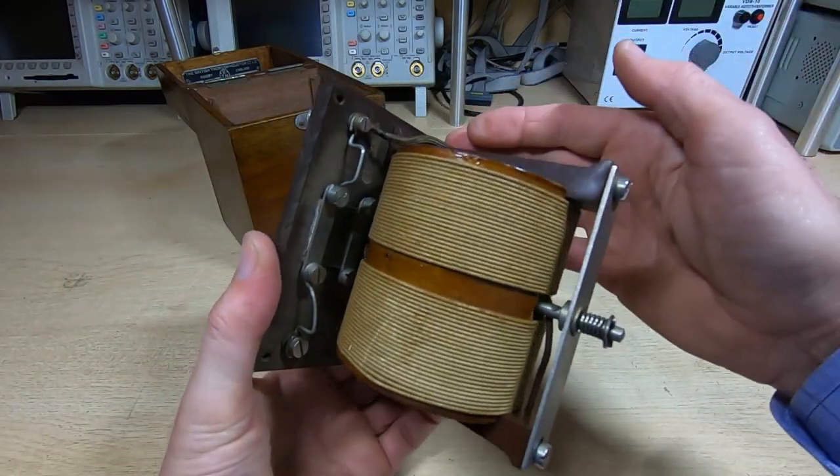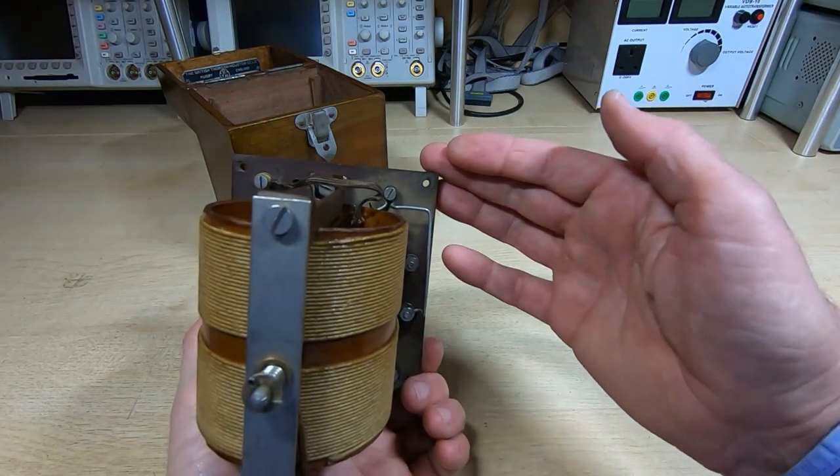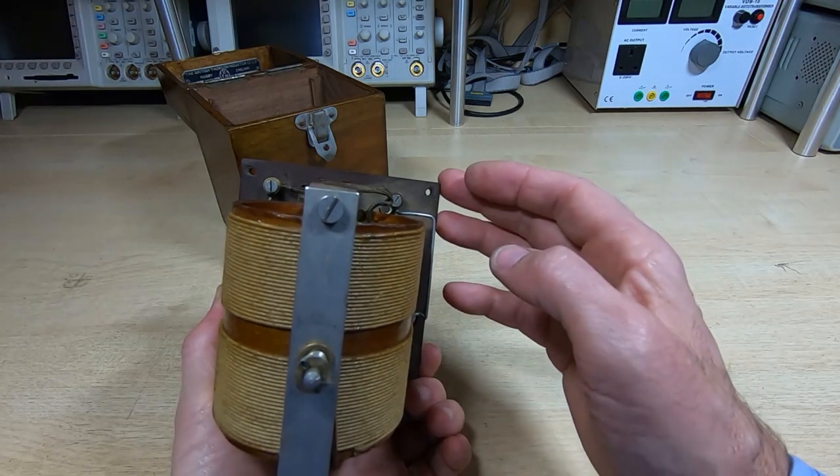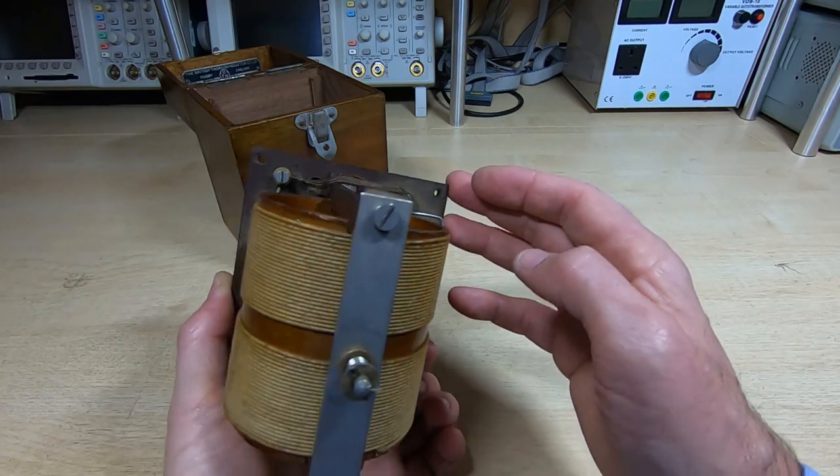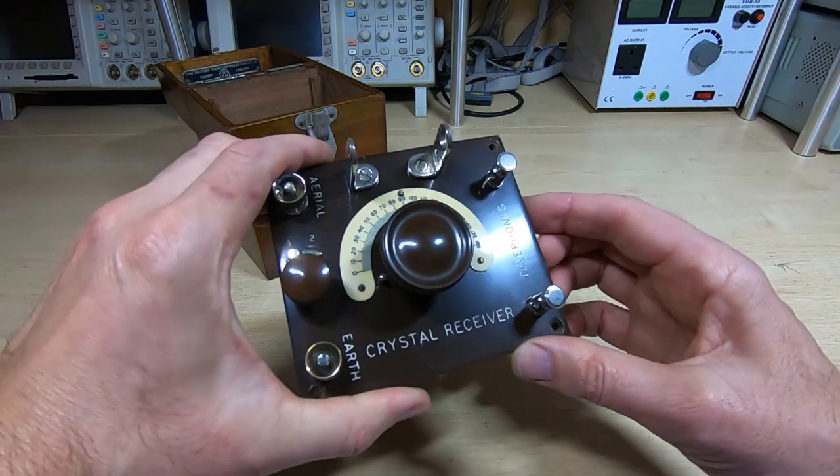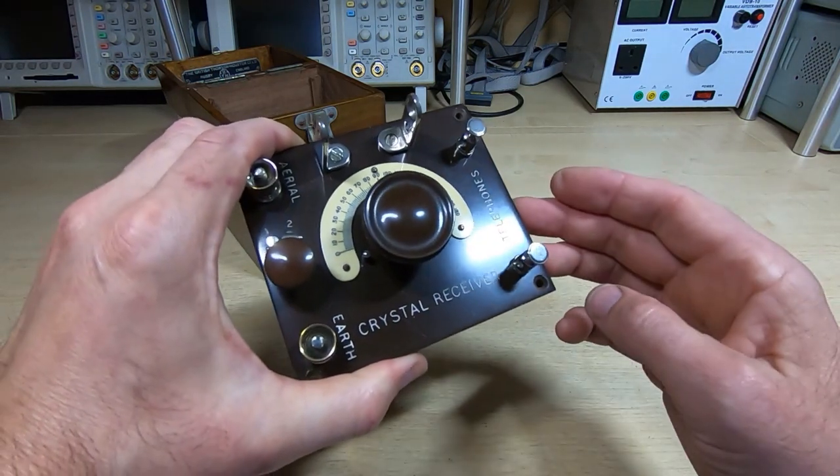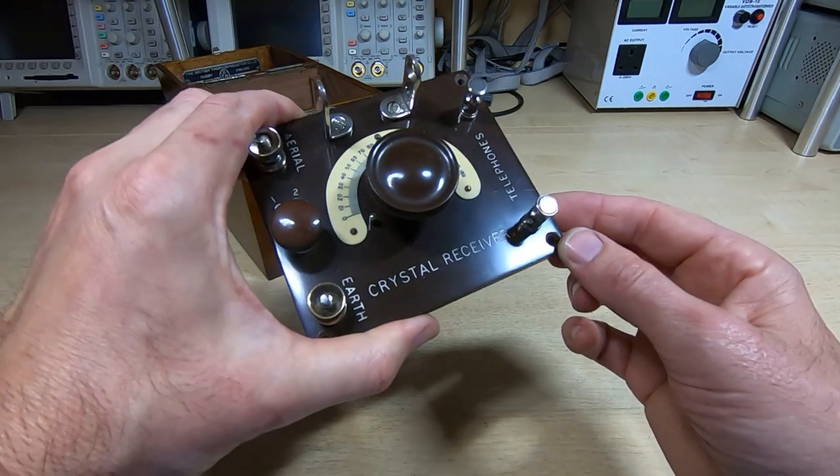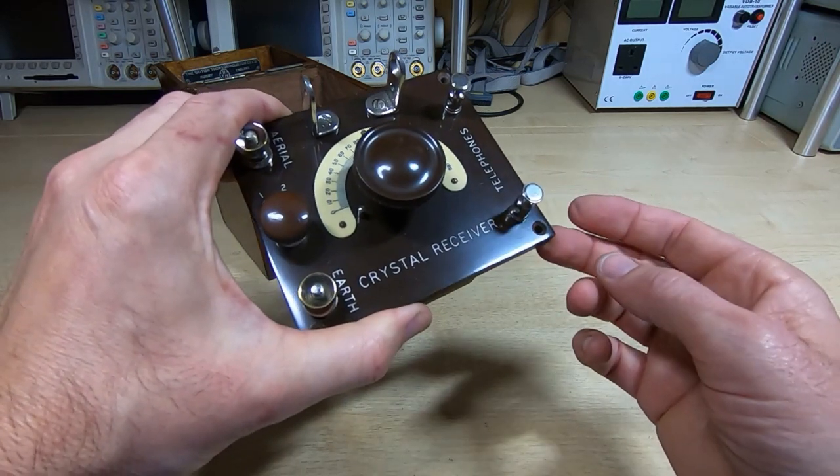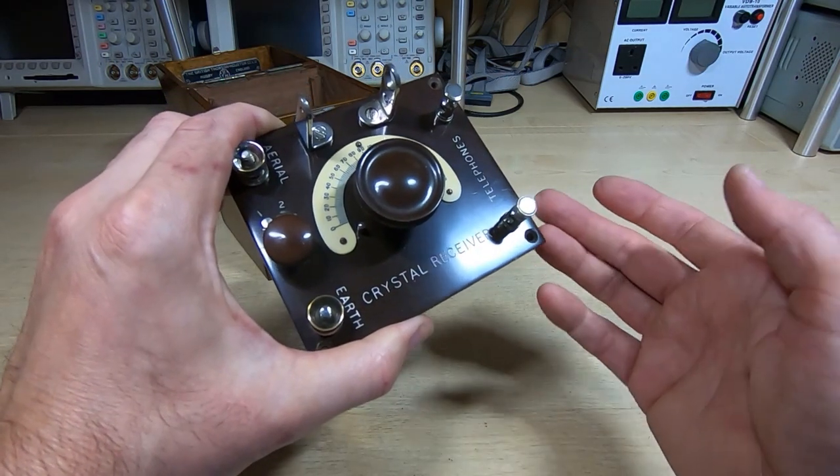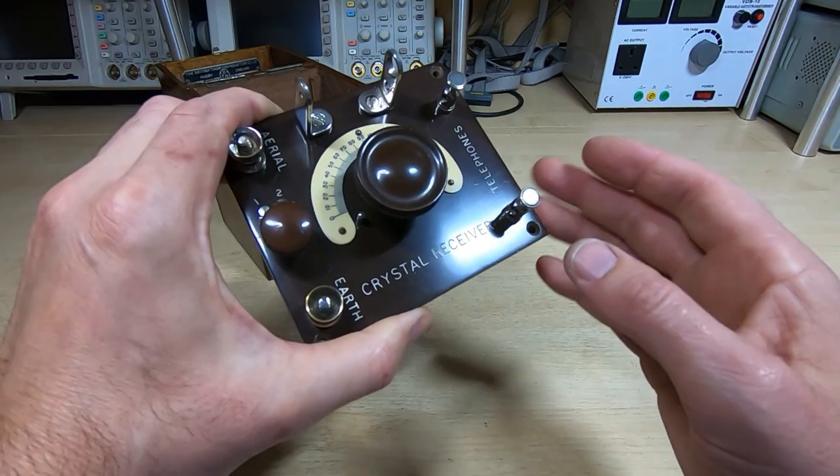Very simple, it's just a tuned circuit capacitively coupled through the detector to the output terminals. Dual band so it's got two frequency ranges. That's all that's in here, there are no active amplifiers so the output is extremely low. You need something like a hundred foot aerial to get anything on this and even then it's very quiet.